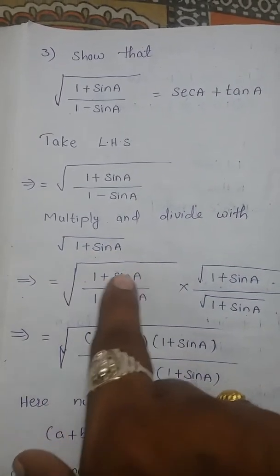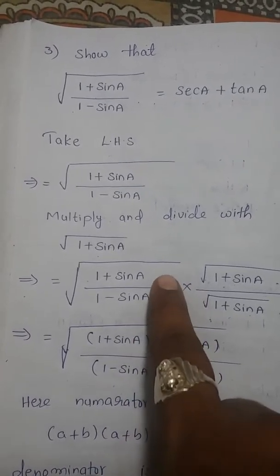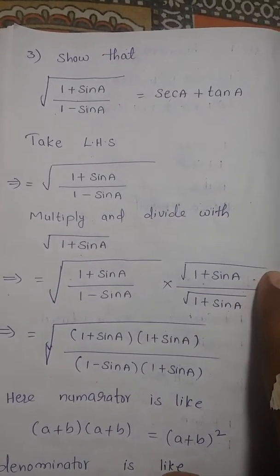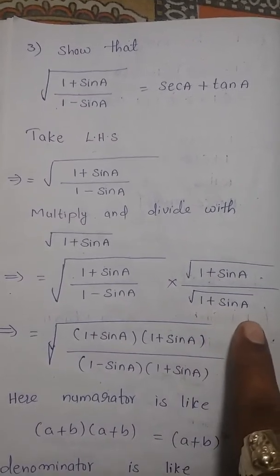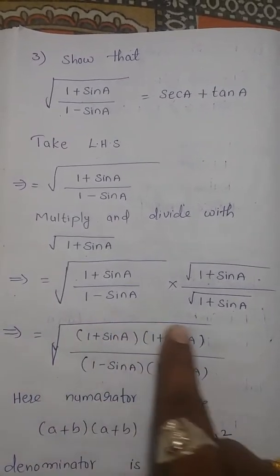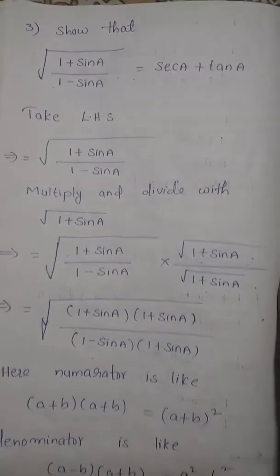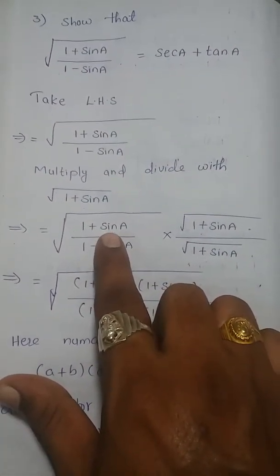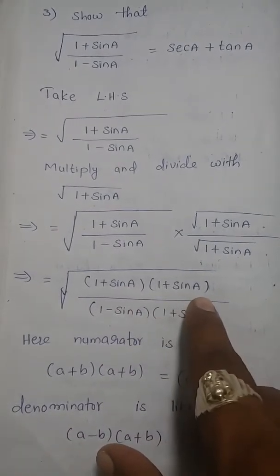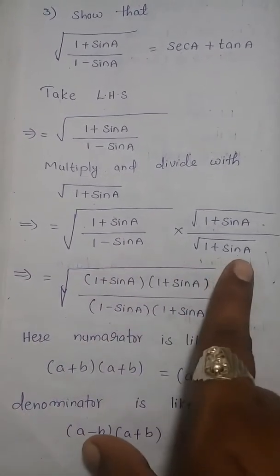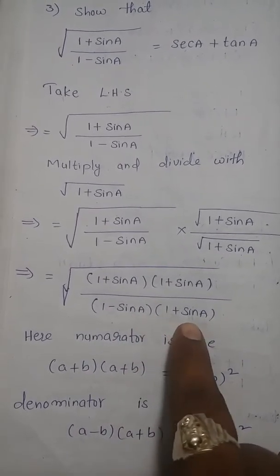The given expression is √((1+sinA)/(1-sinA)). Now we multiply with √(1+sinA). Using the property √a × √b = √(ab), the numerator becomes √((1+sinA)(1+sinA)) and the denominator becomes √((1-sinA)(1+sinA)).